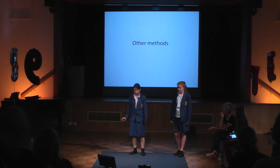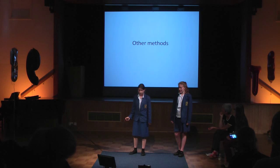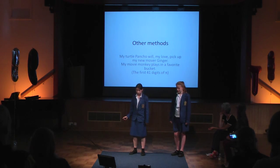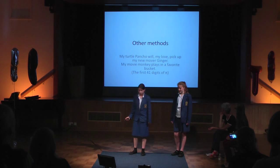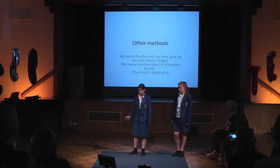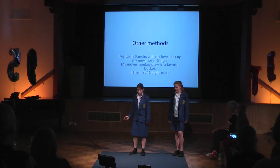There are lots of other methods used to learn pi. For example, you can use an alphabet called the phonetic code, which associates each number with one or more letters. For example, M is three because M has three downward strokes. Then using the letters in the right order, combined with other letters not associated with any particular numbers, you can make words and sentences. So 'my turtle Pancho, will my love, pick up my new movie Ginger, and my movie monkey plays in a favourite bucket' make up the first 41 digits of pi.